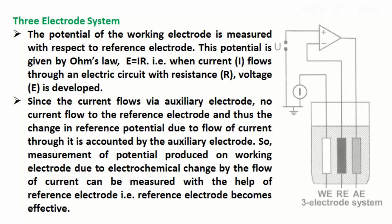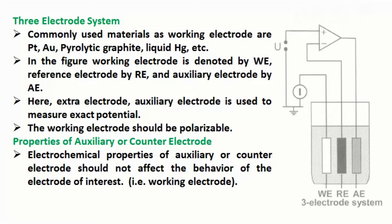This potential is given by Ohm's law: E = IR, that is, when current I flows through an electric circuit with resistance R, voltage E is developed. Since the current flows via the auxiliary electrode, no current flows to the reference electrode, and thus the change in reference potential due to flow of current through it is accounted for by the auxiliary electrode. So, measurement of potential produced on the working electrode due to electrochemical change can be measured with the help of the reference electrode, which thus becomes effective.